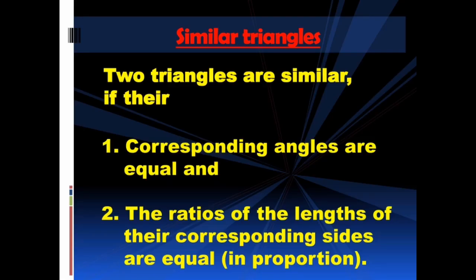Now we shall discuss what are similar triangles. So far we have discussed what are similar figures and how these are different from congruent figures. Now we are going to discuss the similarity of triangles. Two triangles are similar if their corresponding angles are equal and the ratios of the lengths of their corresponding sides are equal or in proportion. You may be thinking that these conditions are the same as those discussed earlier for similarity of figures — and yes, you are right. Both the set of conditions for similarity of two figures and two triangles are the same.